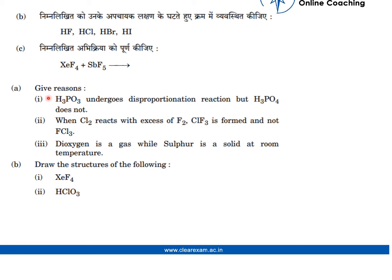We are given part (a): give reasons. First, H3PO3 undergoes disproportionation reaction but H3PO4 does not. Second, when Cl2 reacts with excess of F2, ClF3 is formed and not FCl3.